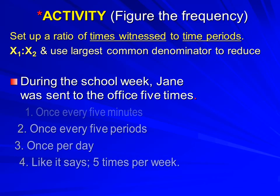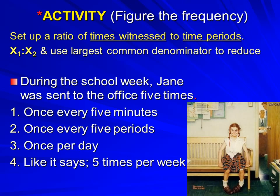Let's look at an example. During the school week, Jane was sent to the office five times. X1, the number of times we saw the action, is five. X2 is one school week, giving a ratio of 5 to 1 — that's five times per week. However, if we look at days: X1 is five times, X2 is five days in a school week, giving a ratio of 5 to 5. The largest common denominator is five, reducing to a 1-to-1 ratio — once per day.